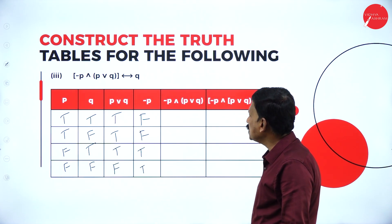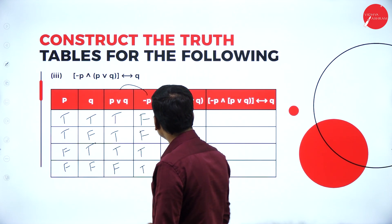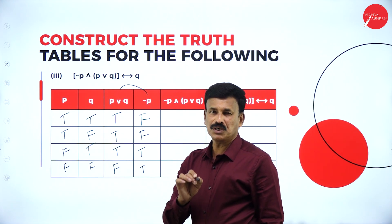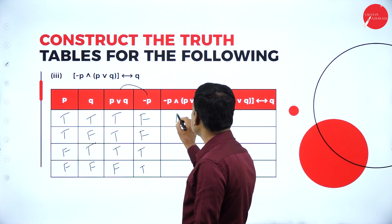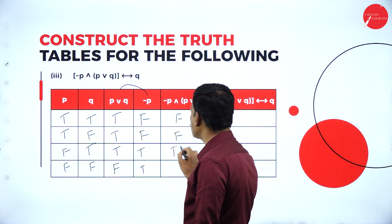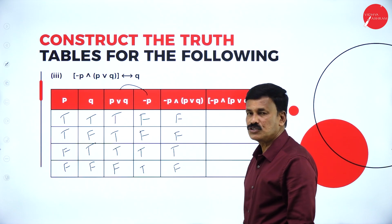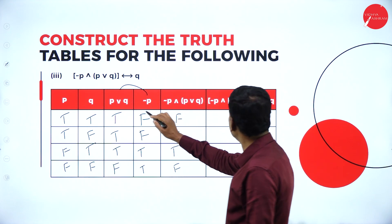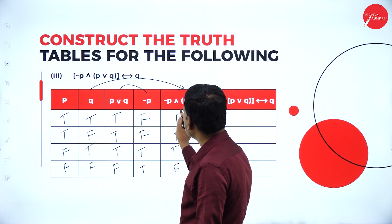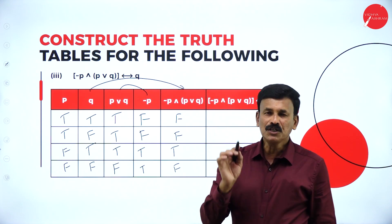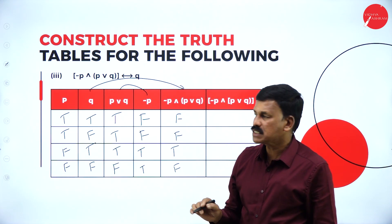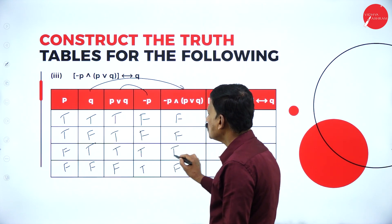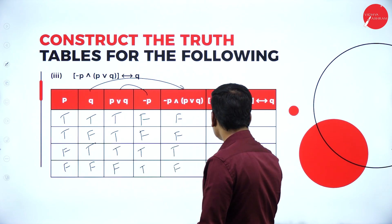Now negation P conjunction P disjunction Q. In case of conjunction, true and true is true; in all other cases it is false. So: false and true is false, false and true is false, true and true is true, true and false is false. Now biconditional for this and Q: true and true is true, false and false is also true; in other cases it is false. So: false and true is false, false and false is true, true and true is true, false and false is true.